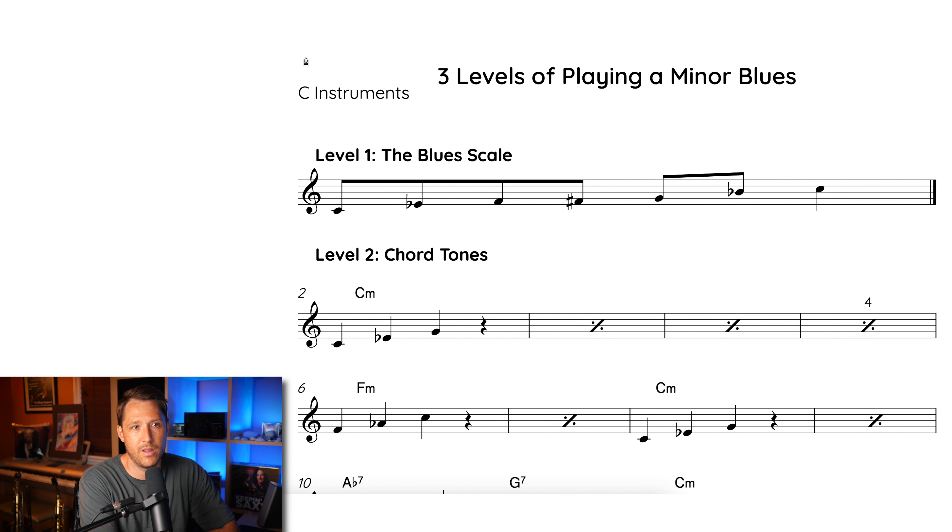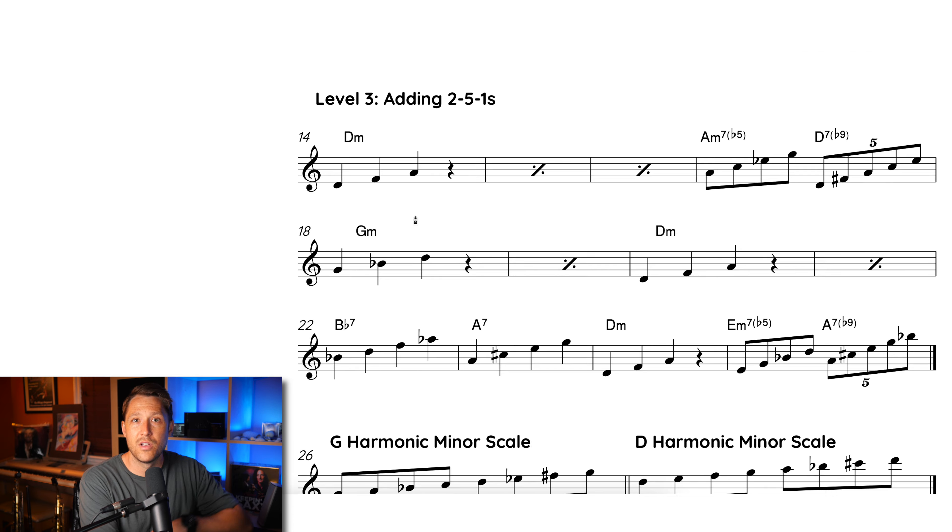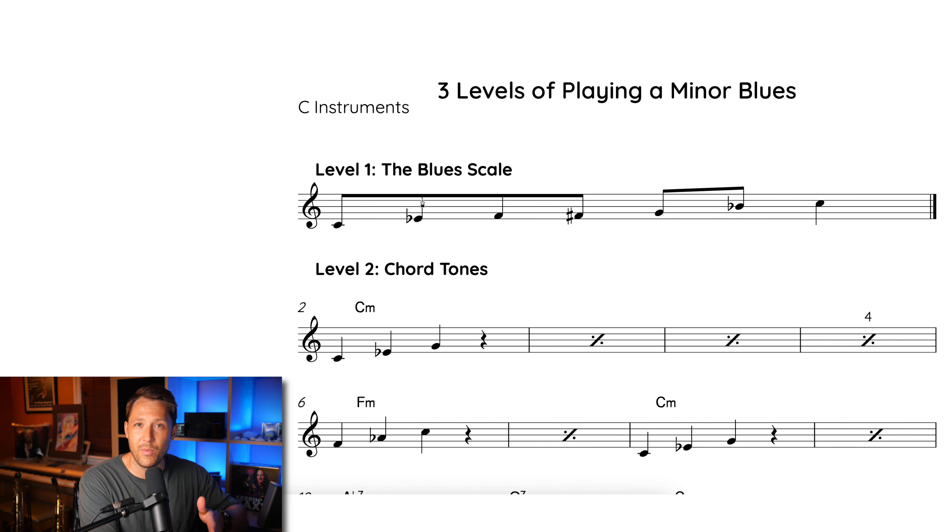Here we are inside of the worksheet, three levels of playing a minor blues. You'll see that it says C instruments up here, but I have parts for C instruments, E flat instruments, B flat instruments, and finally the fourth page, bass clef. So when you download the PDF worksheet and it says C instruments, don't email me and say where's the E flat? I'm gonna say it's on page two. You get all of the different keys in the one download just to make it easier for you. For this video, I'm gonna be using the concert pitch here, the C instrument one. Like I said, I'm only gonna be focused on improvising through a minor blues. I'm not talking about a specific song. I'm doing one in concert C minor. So if you wanna maybe think of the song Mr. PC by John Coltrane, that's a great tune. Those are the chord changes here.